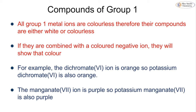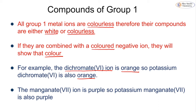All group one metal ions are colorless, so their compounds are either white or colorless. If they are combined with a negative ion that has a color, they will show that color. For example, the dichromate ion is orange — you would be told this in the question — so potassium dichromate is also orange because the potassium doesn't provide a color. Manganate is purple, so potassium manganate is also purple.